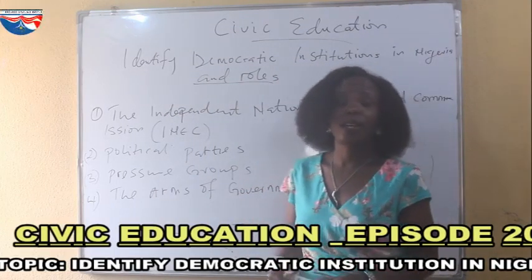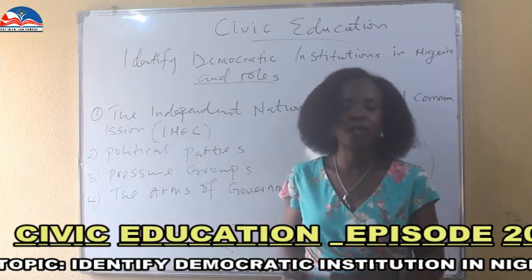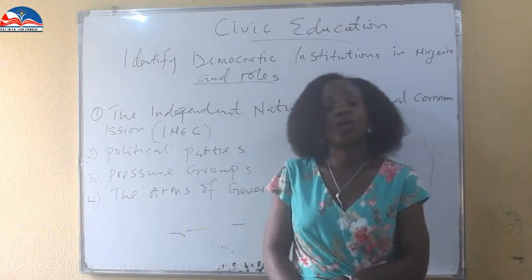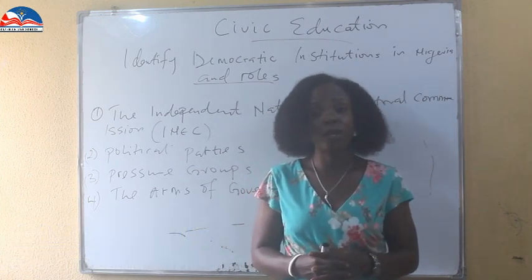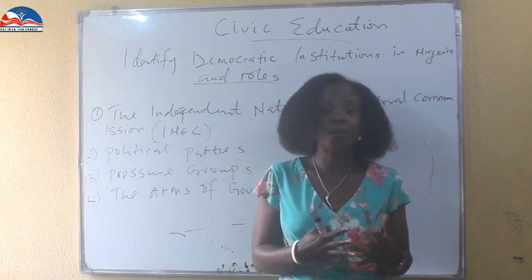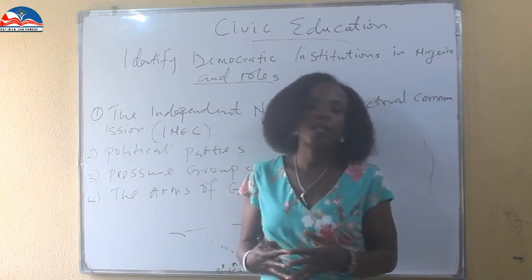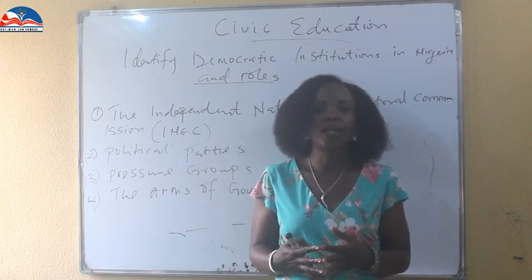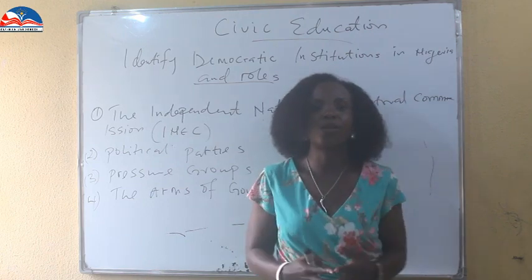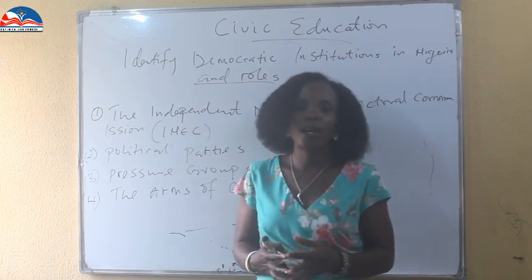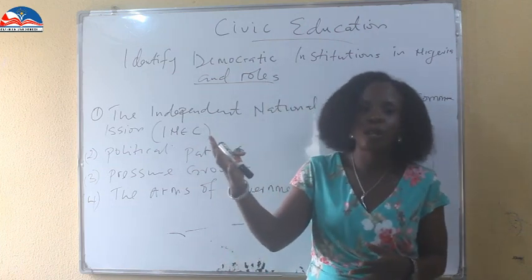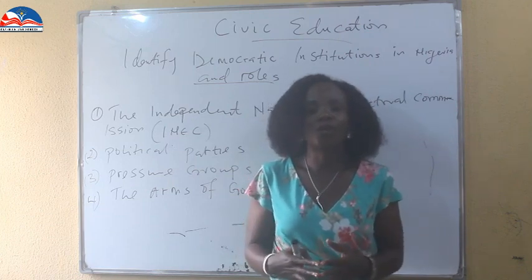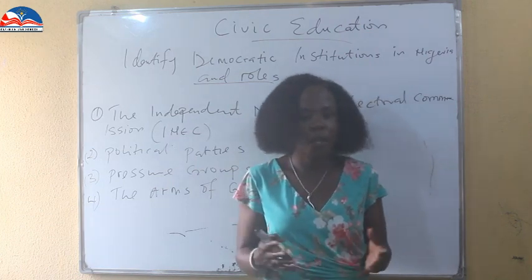It's my pleasure having you on our civic education class today. Welcome to our class. We are still on our democratic series. Last class we discussed what democracy is. We saw democracy as a government for the people, by the people, and that democracy has to do with giving power to the masses, giving power to the citizens. Those who are put in position are to serve them, and you and I have a part to play to make a democratic process complete.